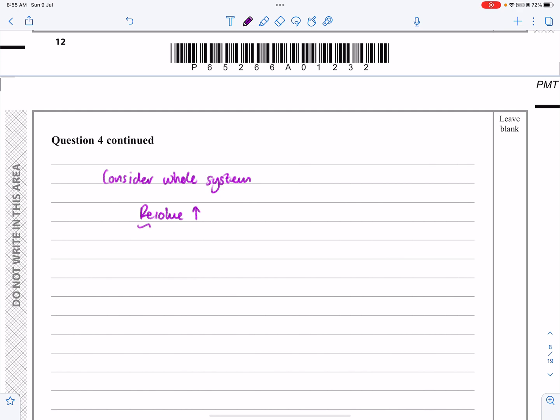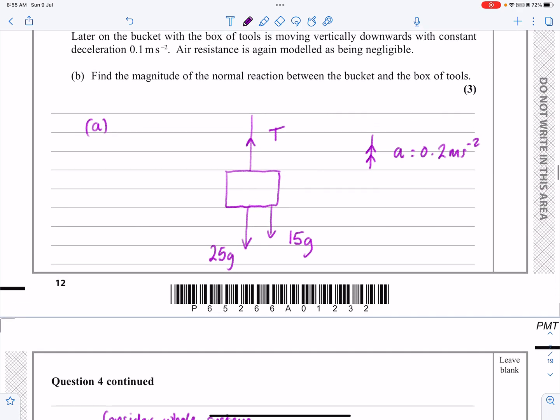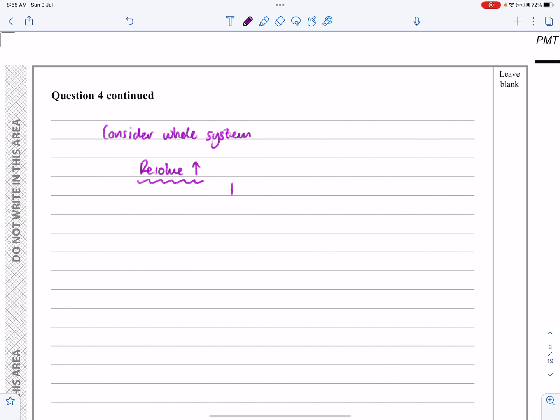Resolve vertically. And what have I got going on? I've just got T up, those two forces going down. If it's accelerating upwards, I know the T is the biggest one. So I'm just going to apply F equals MA.